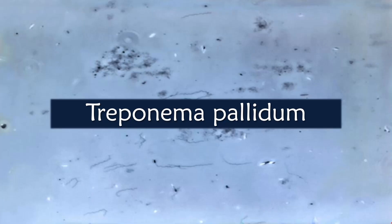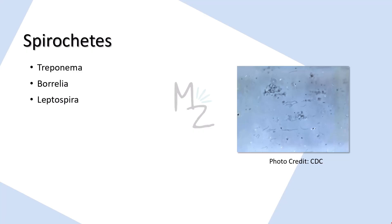Assalamu alaikum everybody, welcome back to another episode of the Bacteriology series. We are almost at the end of this series, and I'm super excited for the upcoming series like mycology and immunology. Today we are going to talk about Treponema pallidum, that is a spirochete. Spirochetes not only include Treponemas, but they also include Borrelia and Leptospira, which we'll be talking about in upcoming videos.